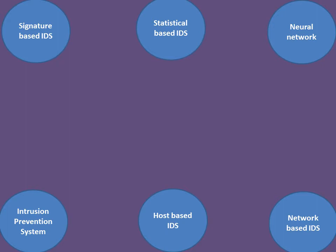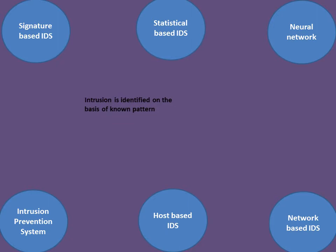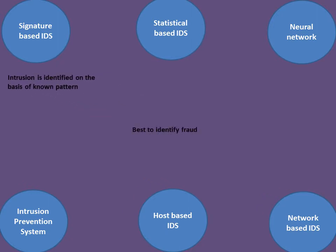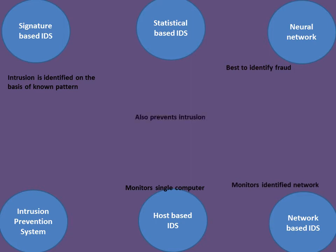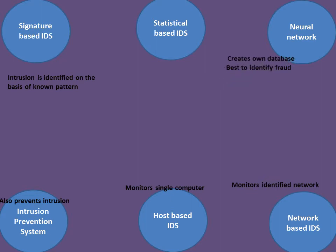Recap: Intrusion identified on the basis of known patterns — Signature-based IDS. Best to identify fraud — Neural Networks. Monitors a single computer — Host-based IDS. Monitors an identified network — Network-based IDS. Also prevents intrusion as against only recording and monitoring — IPS. Creates its own database — Neural Networks. High false alarm rate — Statistical-based IDS.